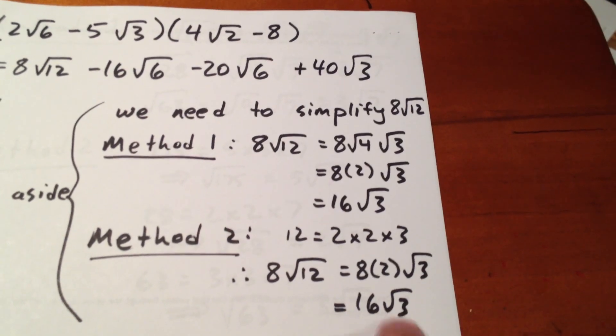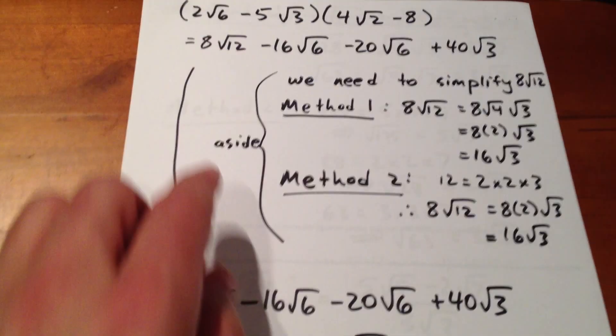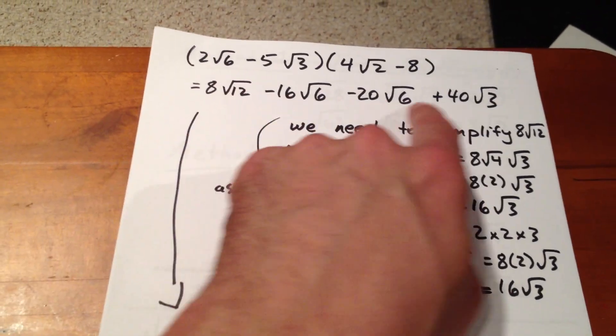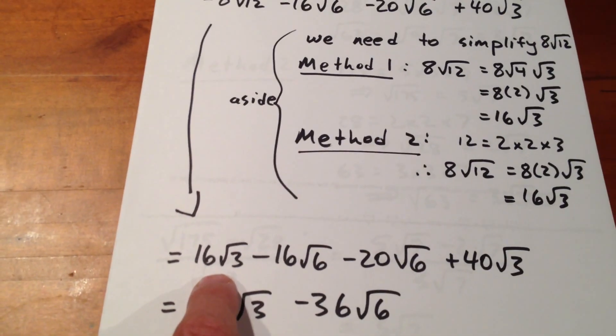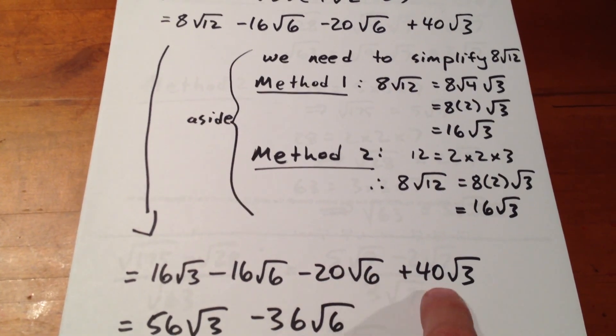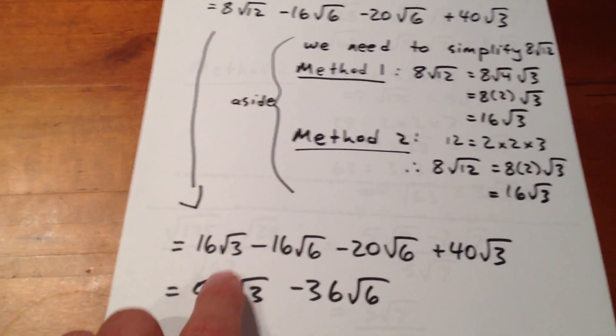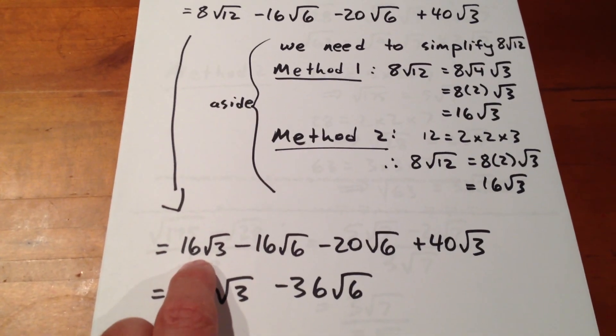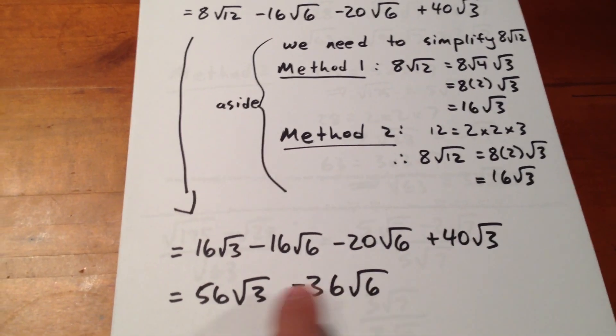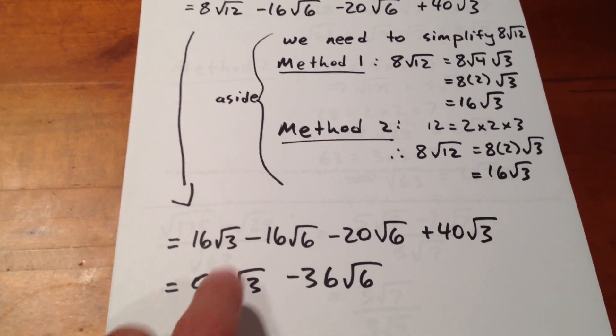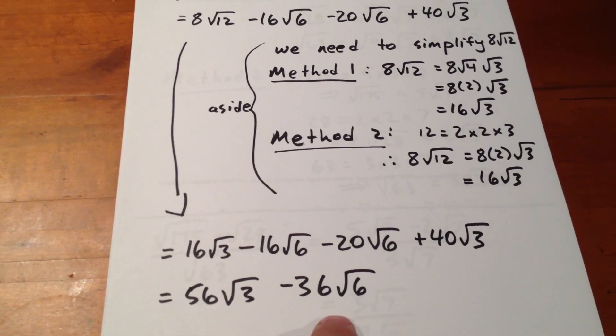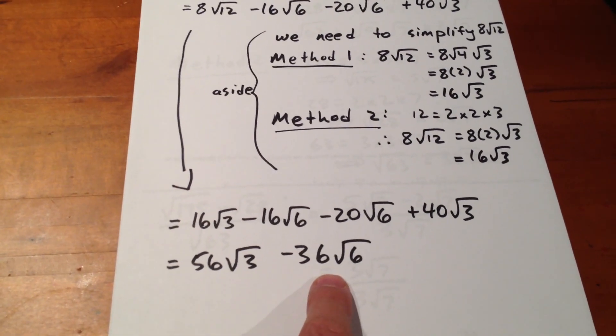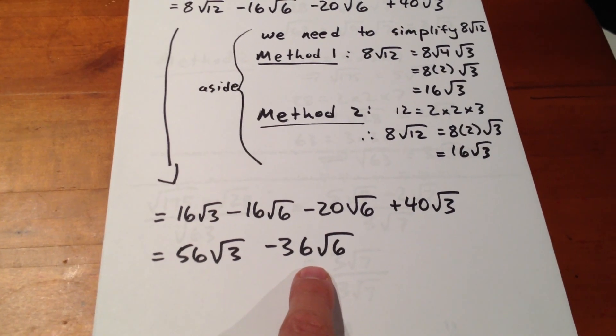Regardless of which method we used, this expression becomes 16√3 - 16√6 - 20√6 + 40√3. At this point, we collect like terms. 16√3 plus 40√3 is 56√3. -16√6 minus 20√6 is -36√6. We have, as our final answer, 56√3 - 36√6.